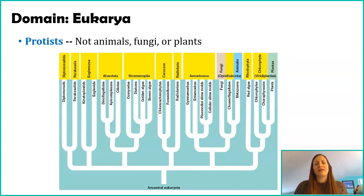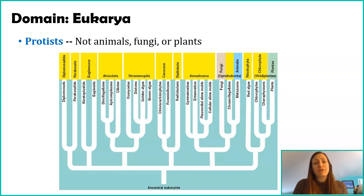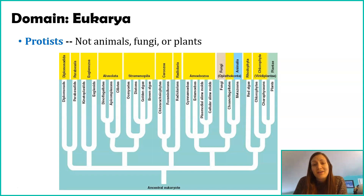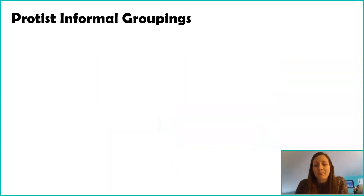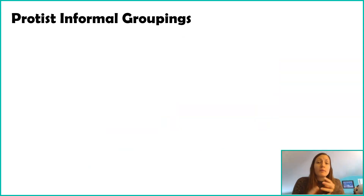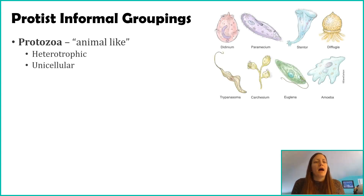For this class, I'm going to focus on protists that exist here in the Maryland area — things you're likely to find under a microscope if you took some pond water and started to investigate what was in it. In addition to the formal groupings we'll go through, protists also have informal groupings, and there are two different terms we're going to use.